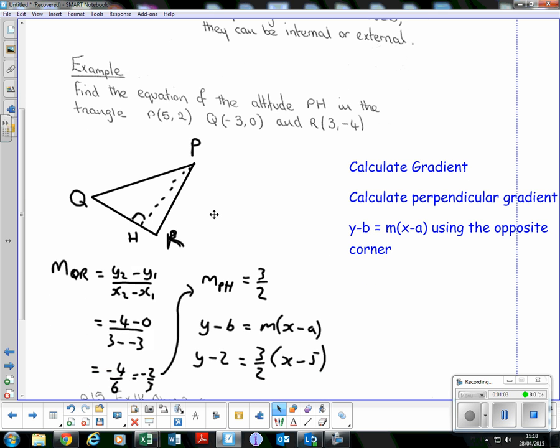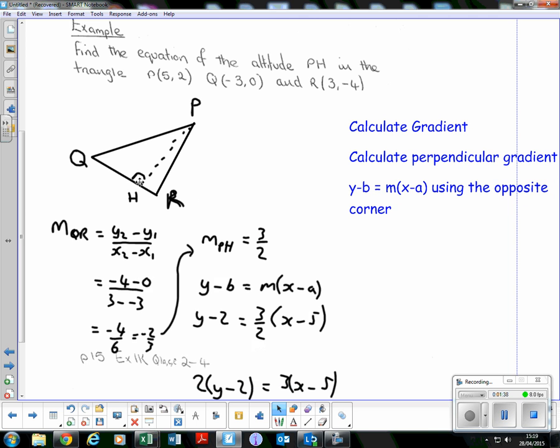We need to find the gradient of the altitude line, and we also need a point on the line. P is obviously on the line. The three things we're going to do are: calculate the gradient of QR, calculate the perpendicular gradient because PH is perpendicular to QR, then use y minus b equals m(x minus a) using point P at the corner of the vertex.